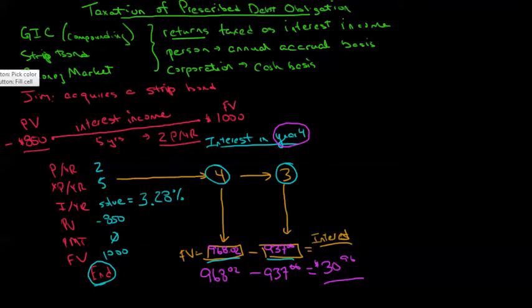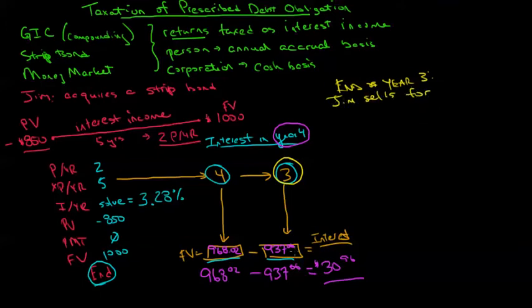Now there's a second type of problem here that's also quite complex with respect to these prescribed debt obligations. This problem arises when we have Jim, so let's say just for the sake of argument that at the end of year three Jim sells this thing, and he sells it for a price other than the price that he should sell it at.